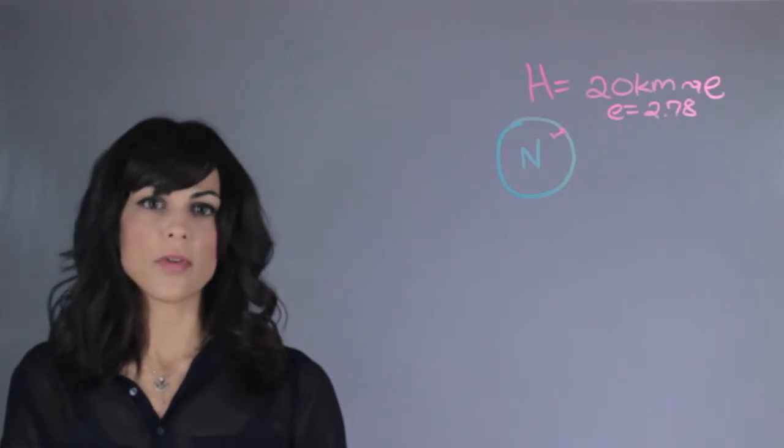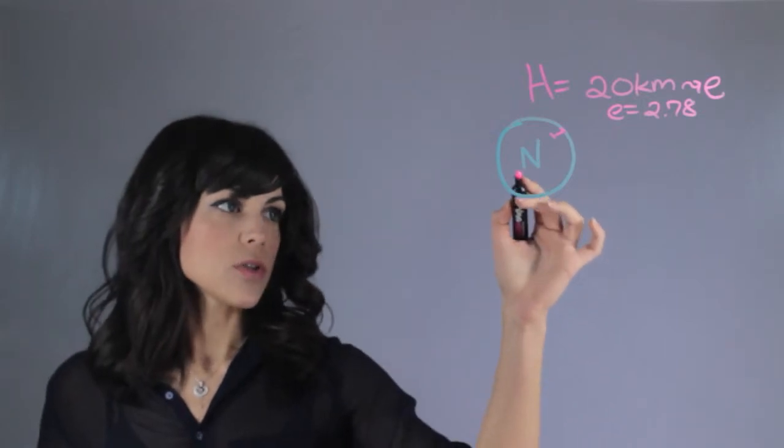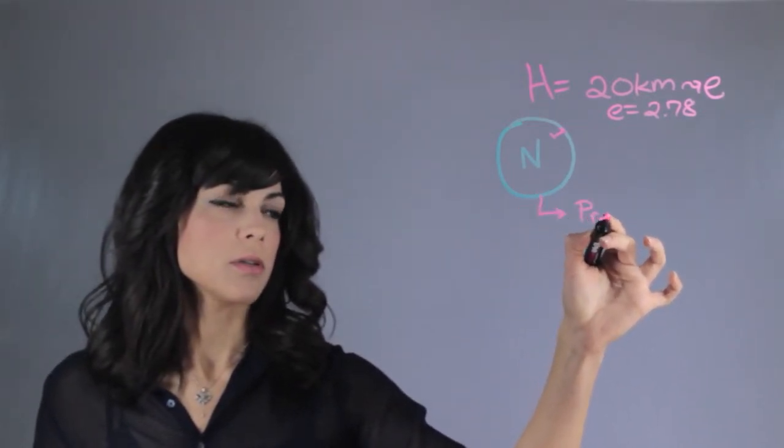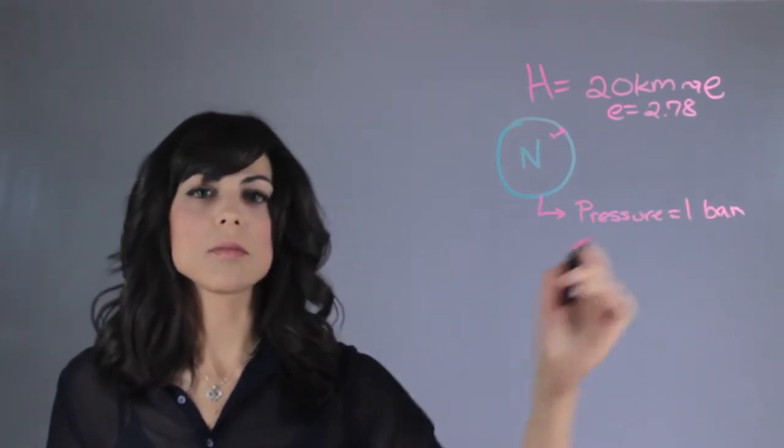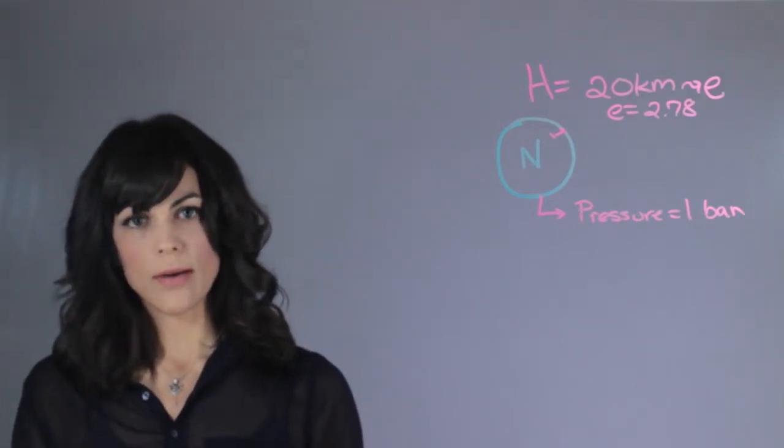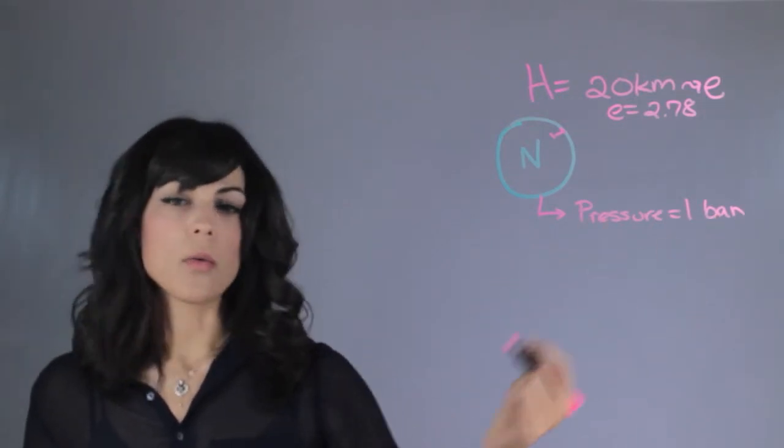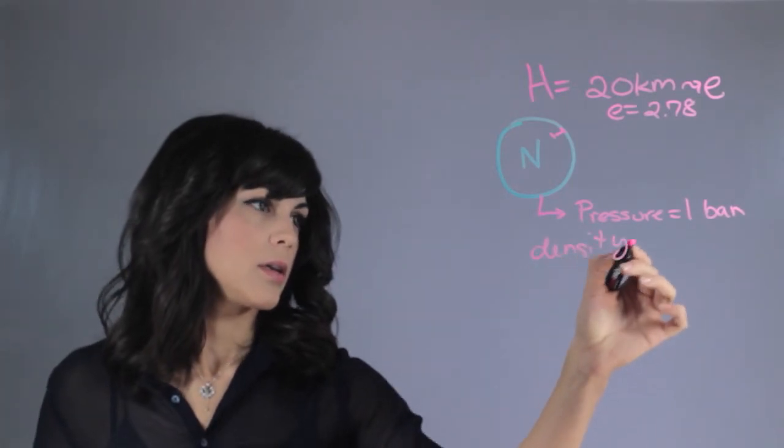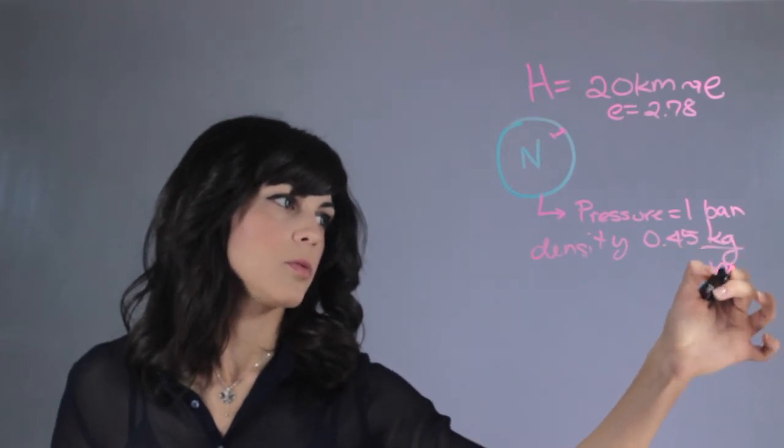So the first thing to define is where is the surface of Neptune and what's the density there. The surface of Neptune, we define it when the pressure is equal to 1 bar. We do the same with every single planet in the solar system, like in our ocean level, we also call that 1 bar. So at 1 bar, what is the actual density? The density here is 0.45 kilograms per cubic meter.